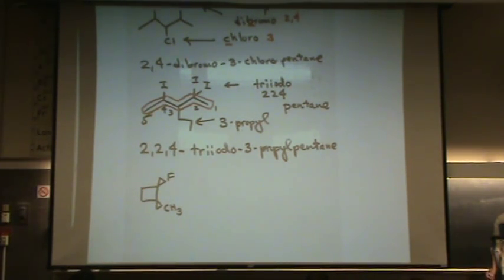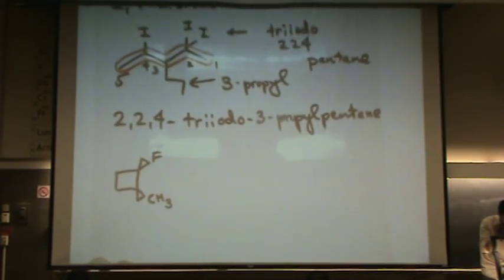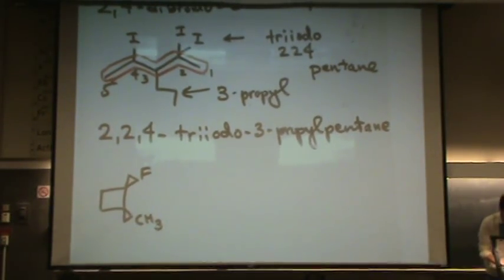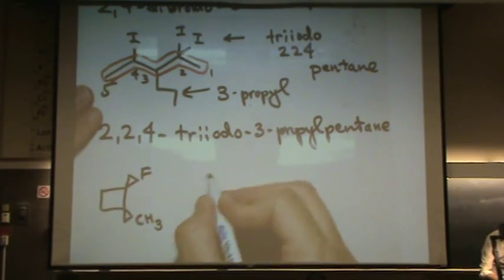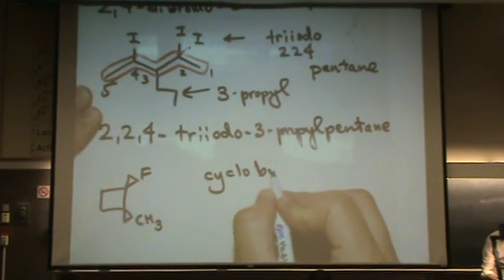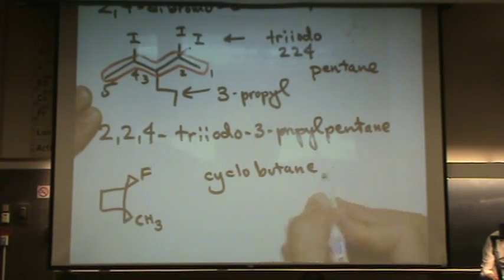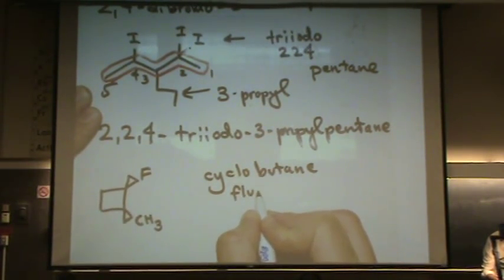Let's do this one. Just so you can see a cycloalkane. I'll zoom in a little bit so it's easier to see. We've got a fluorine and a methyl on a cyclobutane. So, one's a fluoro, one's a methyl.